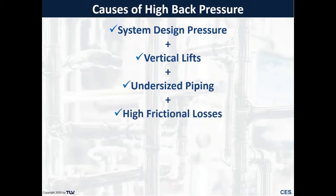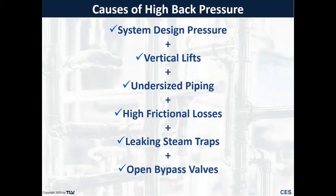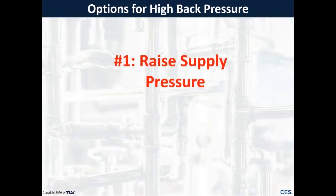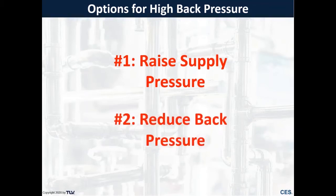High friction losses from valves, turns, and elbows also contribute to back pressure. Some big causes are leaking steam traps adding extra steam into the condensate return line, as well as open bypass valves. To address high back pressure, you have two options: raise the supply pressure — often not feasible — or reduce the back pressure. The easiest way is to replace leaking steam traps and identify and close open blowdown valves, which can very quickly and easily reduce back pressure in the condensate return system.